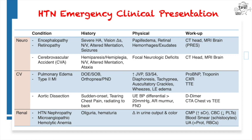Strokes can also occur. They are usually hemorrhagic and will present with focal neurologic deficits, but also severe headache and nausea as a consequence of increased intracranial pressures. Hemorrhagic strokes can usually be seen on CT, but ischemic strokes will require an MRI. In the event of a suspected stroke, make sure to contact the rapid response team for strokes if your institution has one.